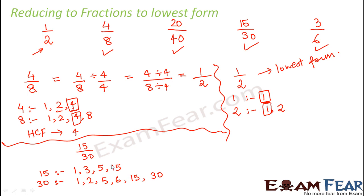So here which is the highest common factor? So the highest common factor here is 15. So what are we going to do? We are going to divide the numerator and the denominator by 15. So 15 divided by 15 is 1 and 30 divided by 15 is 2. So again, this is also reduced to its lowest form. So this is how we reduce fractions to its lowest form.